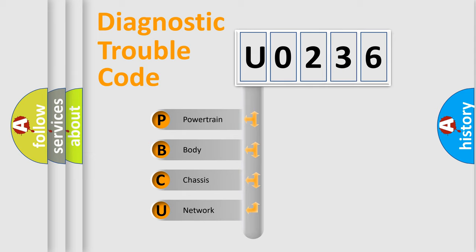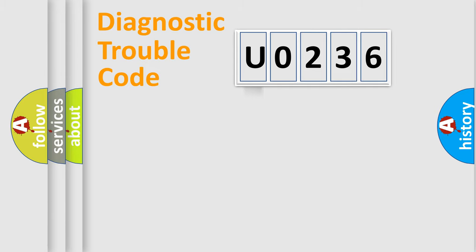We divide the electric system of automobile into four basic units: Powertrain, Body, Chassis, Network. This distribution is defined in the first character code.